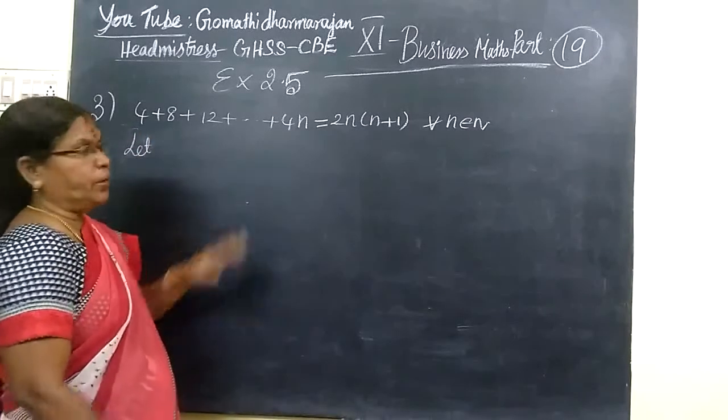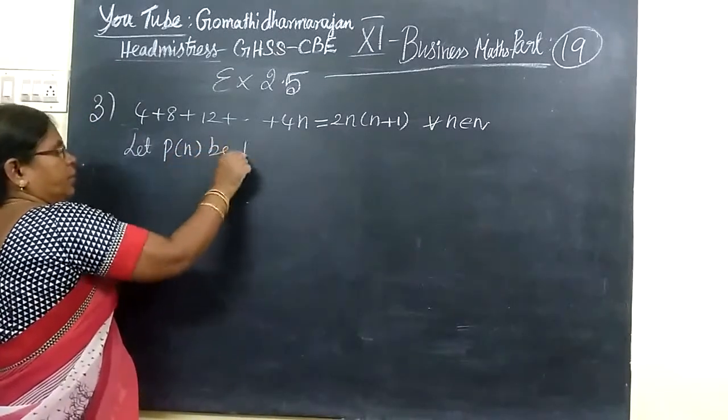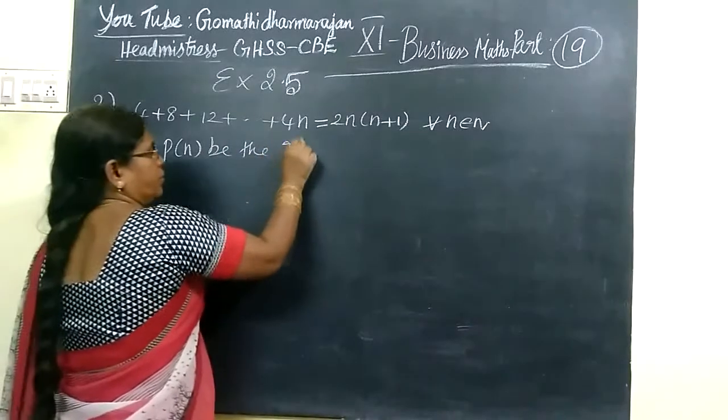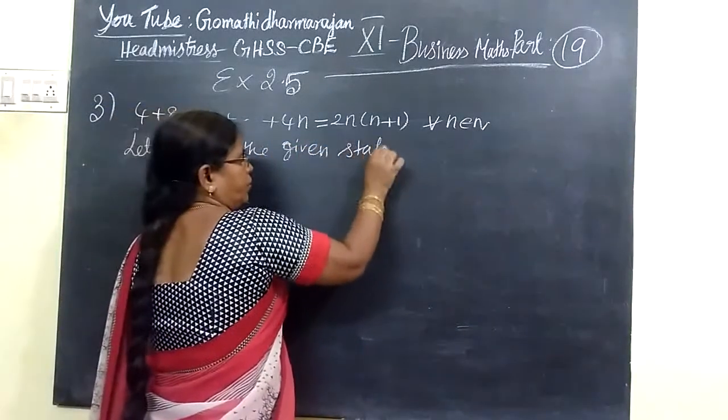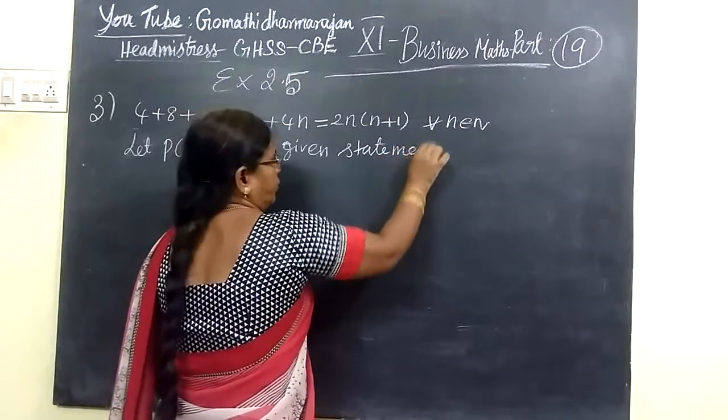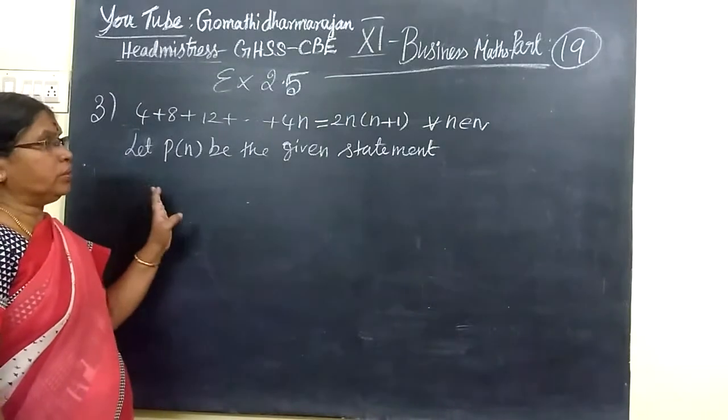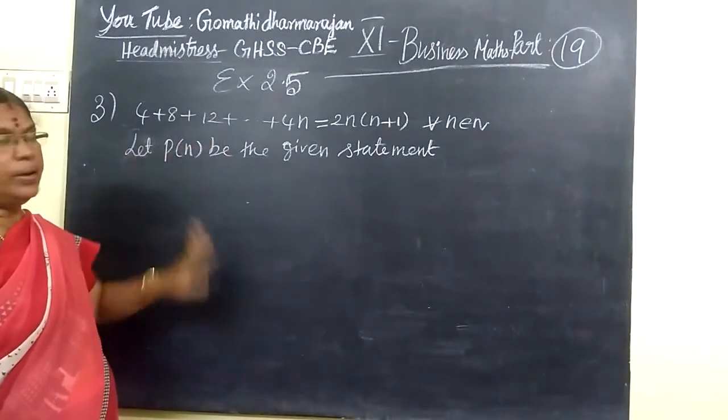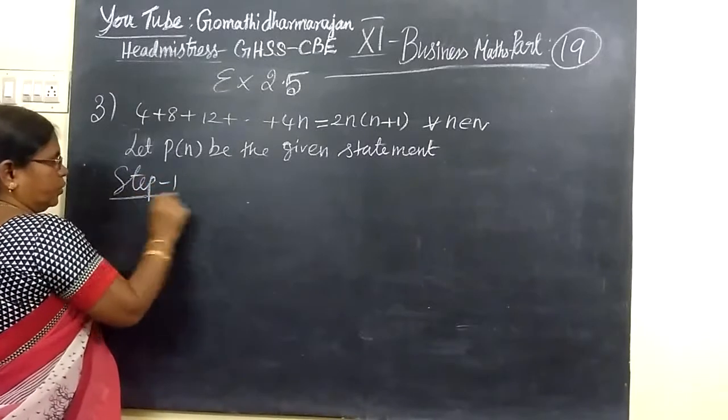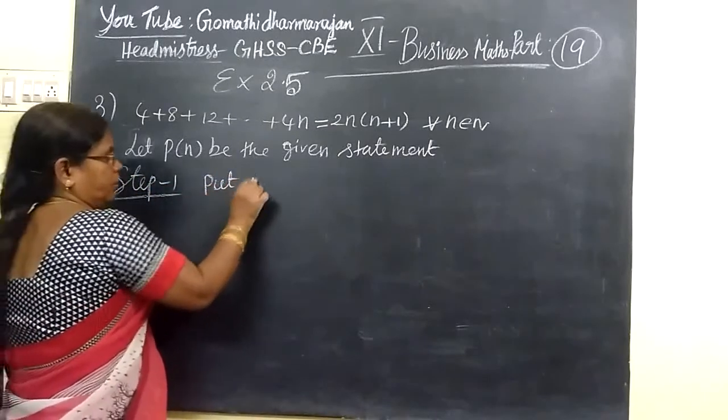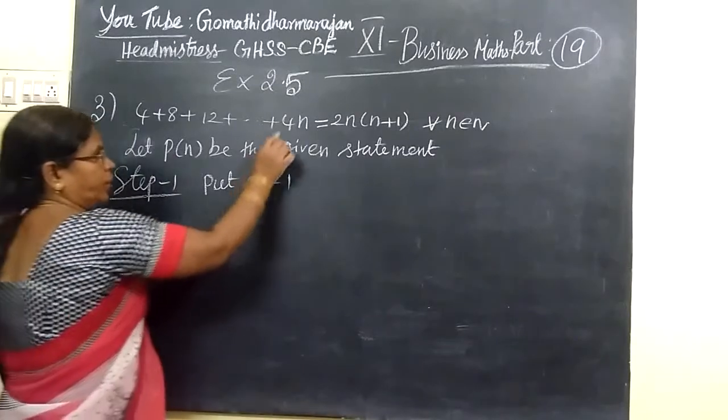We are given a statement. So this P of N is the given statement. P of N is the given statement. Then step 1, put N equal to 1. So N equal to 1, 4 divided by 1, so this is 4.